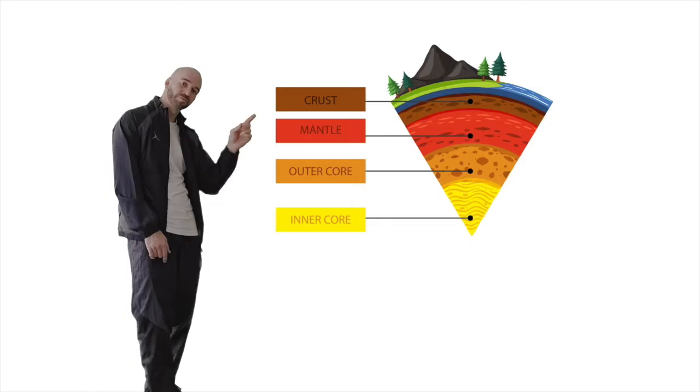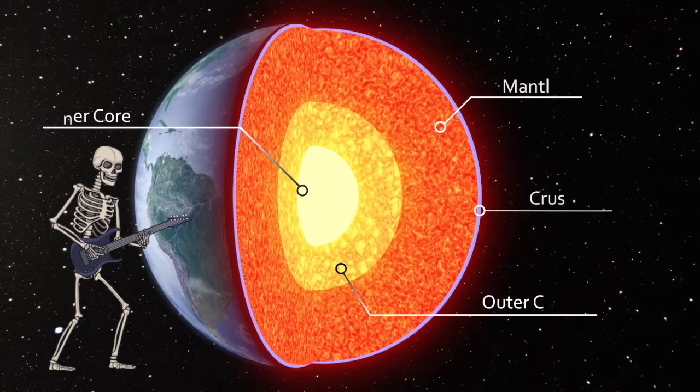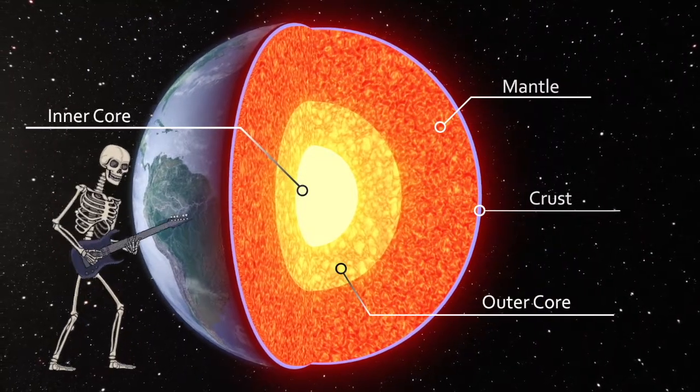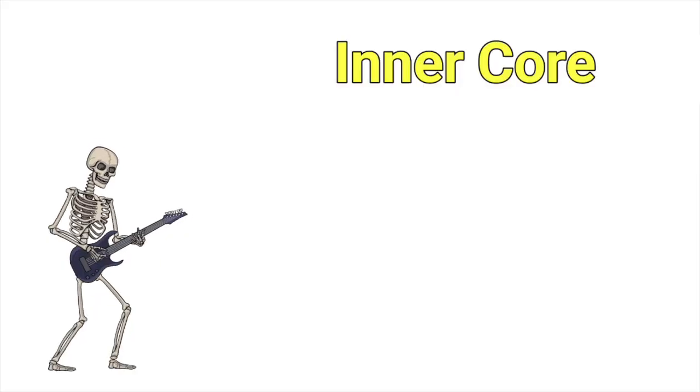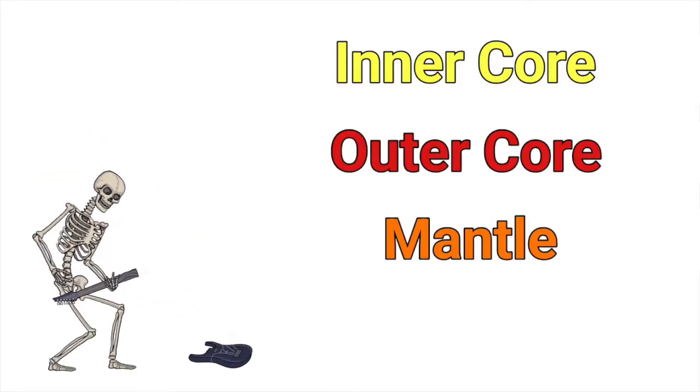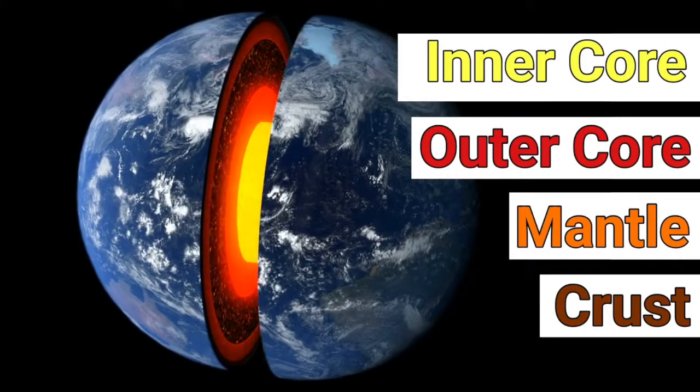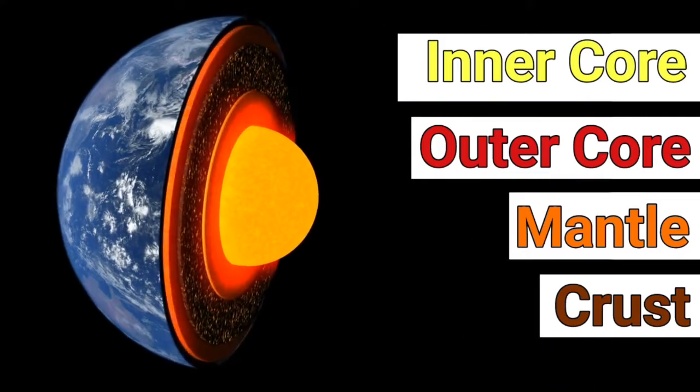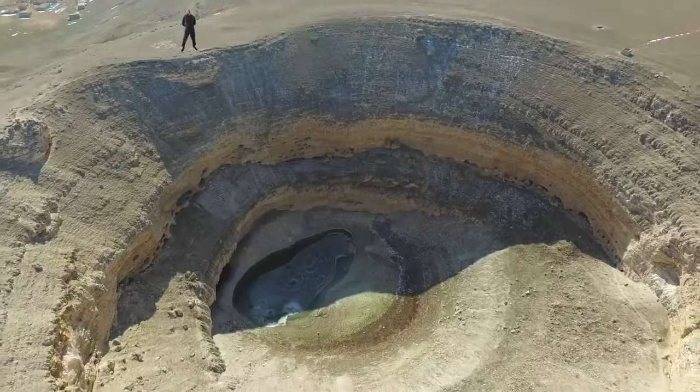Inner core, outer core, mantle, thin crust. That's what it is. Inner core, outer core, mantle, thin crust. Say it with me now. Inner core, outer core, mantle, thin crust. Four layers.